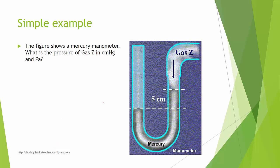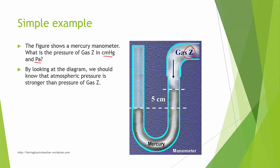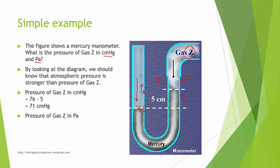Similarly, for gas Z, we want to find the pressure in cm Hg and Pascal. By looking at the diagram, gas Z has a lower pressure than atmospheric pressure since the atmospheric side presses down harder. Gas Z plus 5 cm equals 76, so you subtract, giving 71 cm Hg. To find Pascal, substitute: 0.71 multiplied by the density of mercury multiplied by 10 gives the value in Pascal.